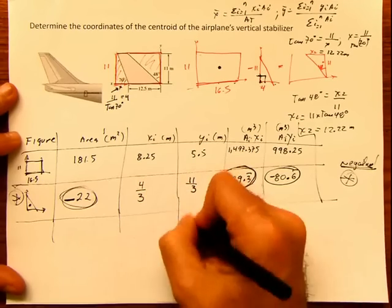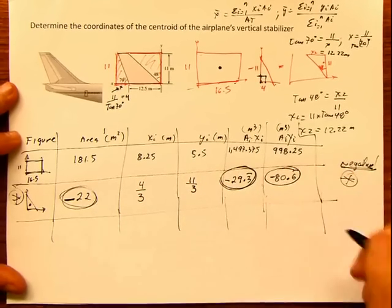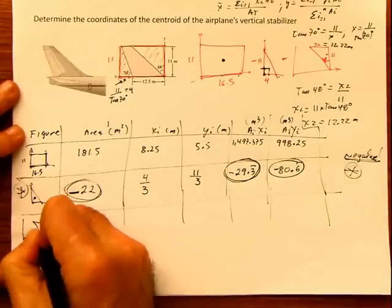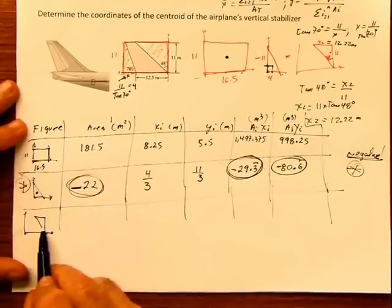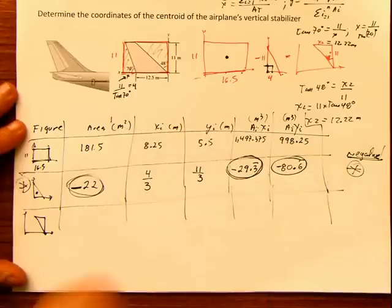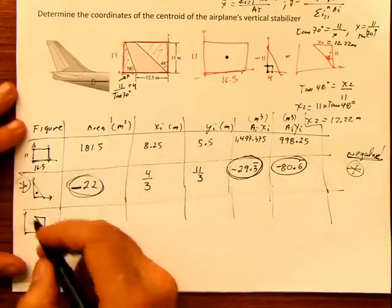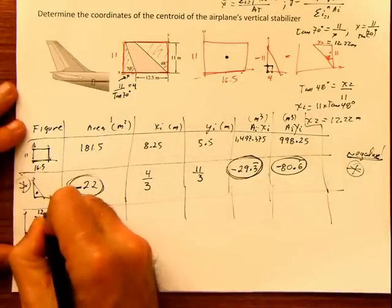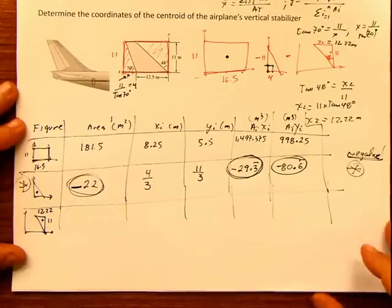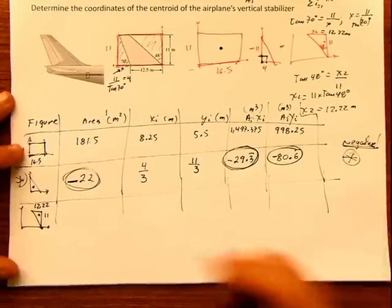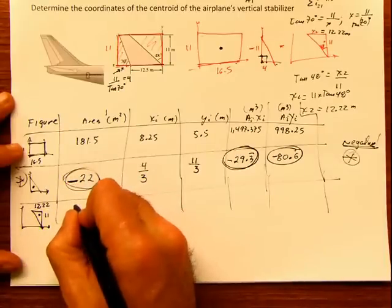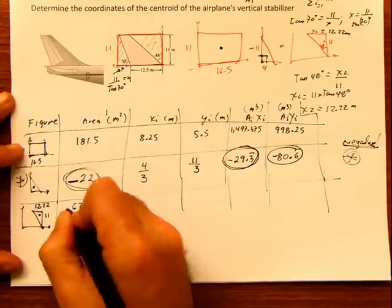Figure three. Figure three is this one. I like putting this location of the axis, because somehow it's giving me a visual representation of the value of the shape that I'm calculating. 12.22, 11, and my centroid is going to be there. So what is the area? 12.22 times 11 divided by 2. That is 67.21 negative.